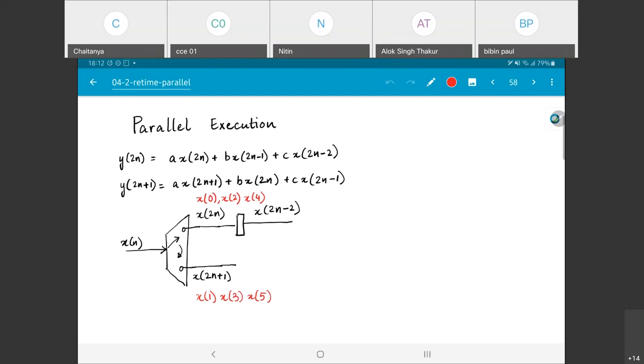Which means that if I put 1 delay element, 1 physical register on the upper branch, the output that is going to create is x of 2n minus 2. Think about it, because effectively the sequence on the upper branch is x of 0, x of 2, x of 4. So the next sample after x of 0 that comes on the upper stream is x of 2, the sample after that is x of 4. Which is why if I put one register and delay it by one sample, what I will get is x of 2n minus 2.